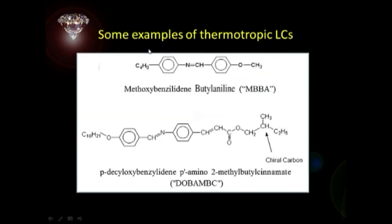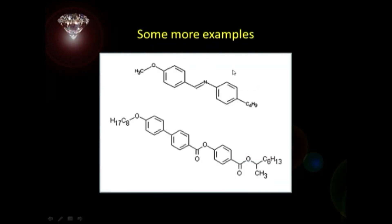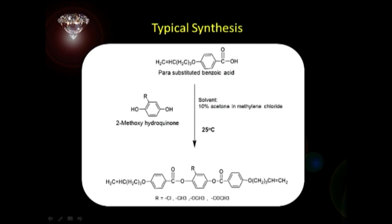Here are some examples of thermotropic liquid crystals. The first molecule you see here is called MBBA. Generally these molecules have a long, elongated structure, and because of that their names are also very long. Here we have two more examples of liquid crystals. One thing you can see is the rigid core with ring structure in both of them, a terminal long chain, and a group which is characteristic of any liquid crystalline material. A typical synthesis can be seen here — one reactant molecule has a carboxyl group, and another molecule has two OH groups. When reacted together, you can get a long molecule with side chains on either side and a core group.